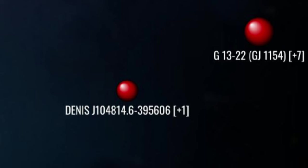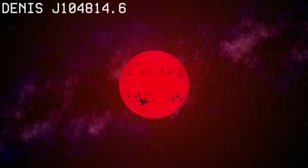Rimward, in 6 parsecs south, we arrive at Dennis J104814.6, a red dwarf which, like 174, varies in less than a day.